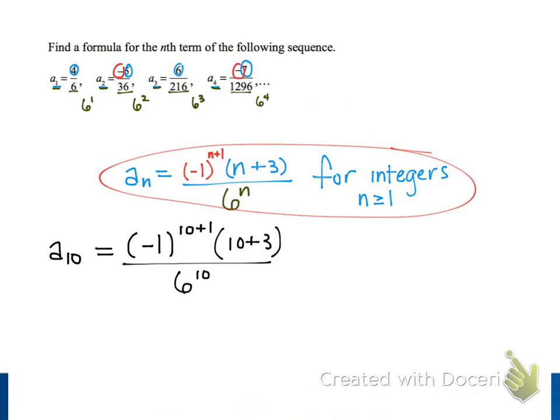This looks kind of messy right now, so we can clean it up a little bit. When we simplify this, our numerator will be negative, because we have negative 1 to the 11th power. And then we're going to multiply this by 13, so our numerator is simply negative 13.